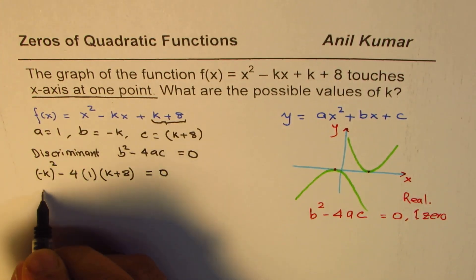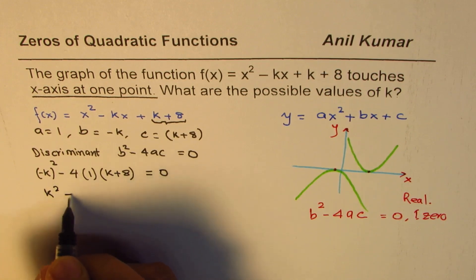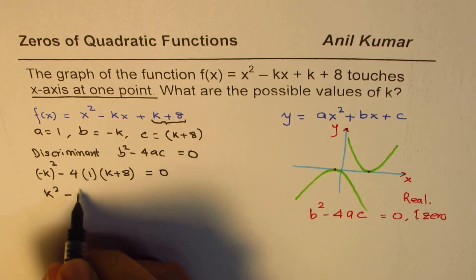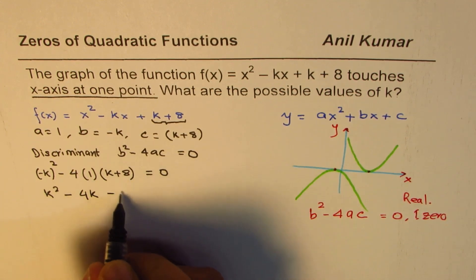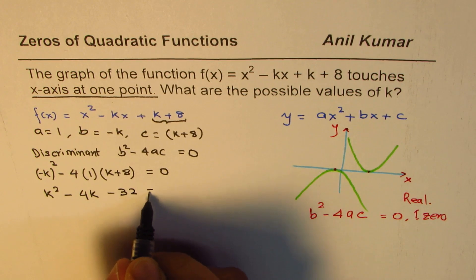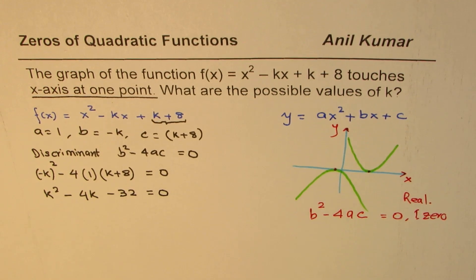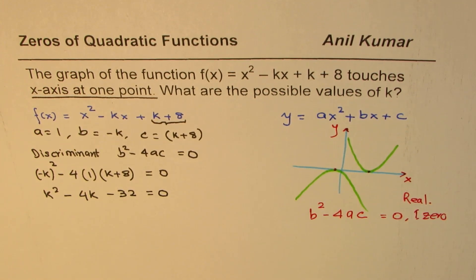So this gives us k squared minus 4 times k is 4k, minus 4 times 8 is minus 32, equals to 0.